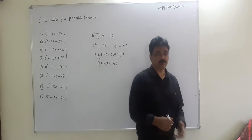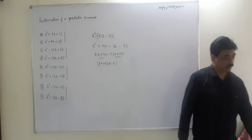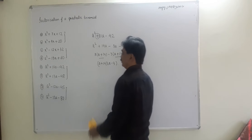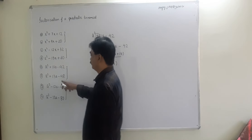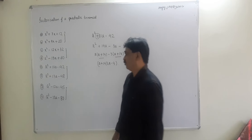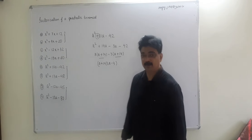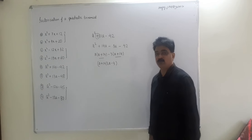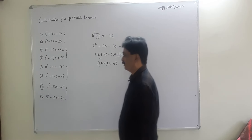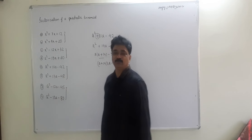Your turn: a² + 13a - 48. Product is 48, difference is 13. 16 × 3 = 48 and 16 - 3 = 13. The positive sign goes to the larger number, sixteen. So the split is +16a - 3a.